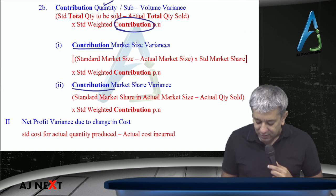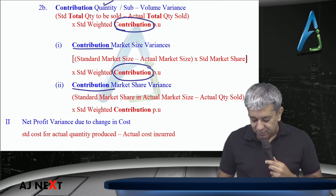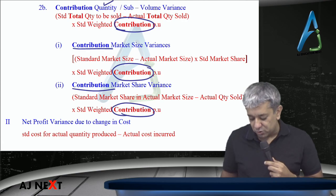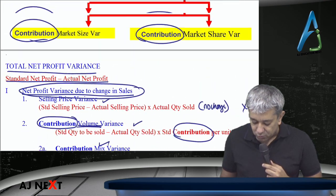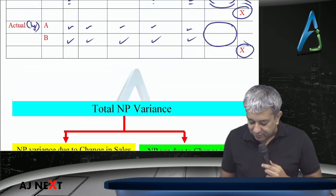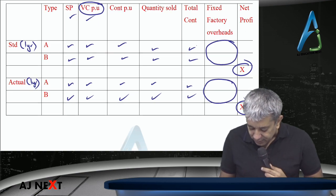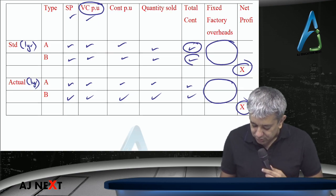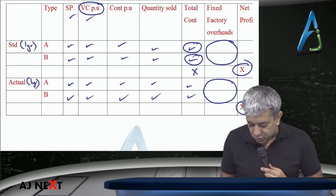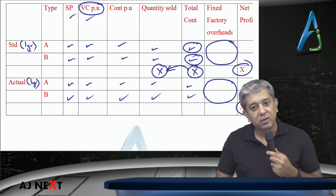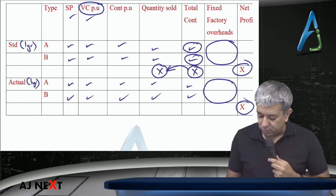Previously standard weighted average profit was used. Now standard weighted average contribution will come — no other difference. For example, to find standard weighted average contribution per unit: A's contribution plus B's contribution equals total contribution, divided by total quantity. This gives you standard weighted average contribution per unit.